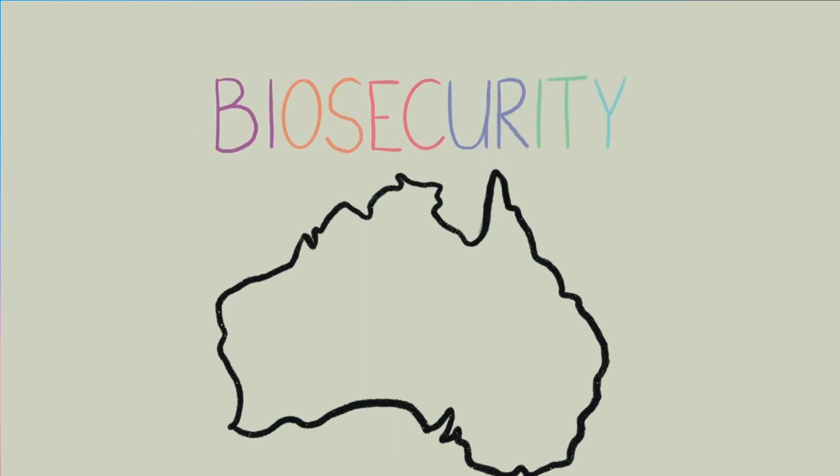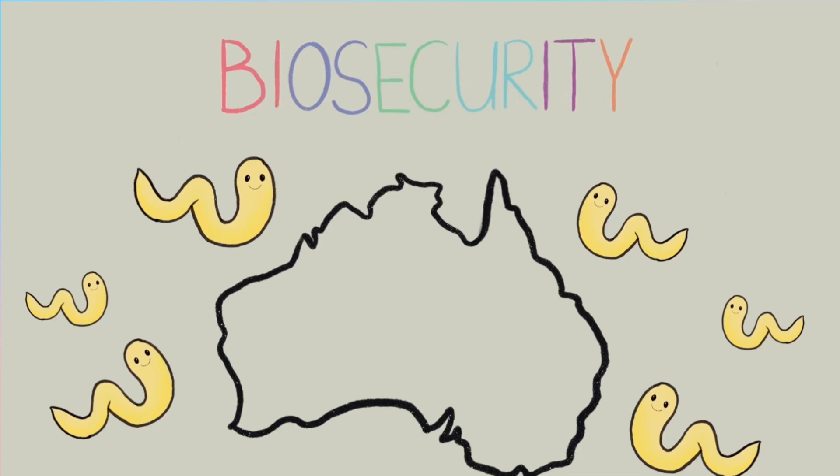In Australia, only 10 cyst nematodes are present because of effective biosecurity measures. However, exotic species still remain a threat and that is where my PhD comes in.